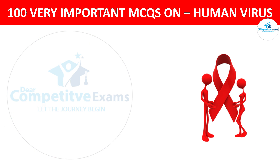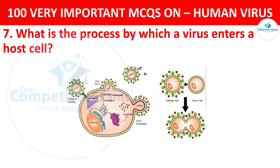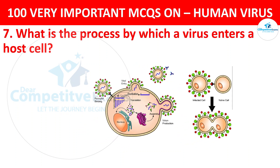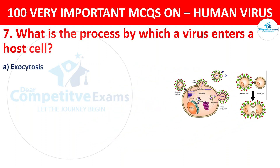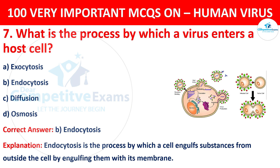Question 7. What is the process by which a virus enters a host cell? Your options are exocytosis, endocytosis, diffusion, or osmosis. The correct answer is B, that is endocytosis. Endocytosis is the process by which a cell engulfs substances from outside the cell by engulfing them with its membranes.